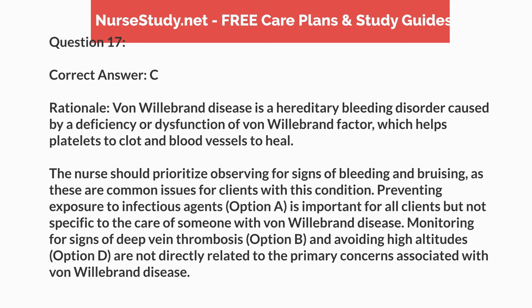Correct answer: C. Rationale: von Willebrand disease is a hereditary bleeding disorder caused by a deficiency or dysfunction of von Willebrand factor, which helps platelets to clot and blood vessels to heal. The nurse should prioritize observing for signs of bleeding and bruising, as these are common issues for clients with this condition. Preventing exposure to infectious agents, option A, is important for all clients, but not specific to the care of someone with von Willebrand disease. Monitoring for signs of deep vein thrombosis, option B, and avoiding high altitudes, option D, are not directly related to the primary concerns associated with von Willebrand disease.